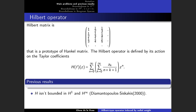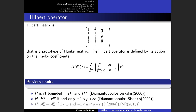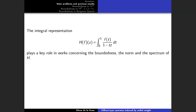Some previous results: when f belongs to H^1 or H^infinity, this series defines an analytic function, so the Hilbert operator is well defined, but it is not bounded in H^1 or H^infinity. Moreover, the Hilbert operator H is bounded in H^p if and only if p is between 1 and infinity. Concerning the standard weighted Bergman spaces, the Hilbert operator is bounded in A^p_alpha if p is greater than 1 and alpha is greater than minus 1 and less than p minus 2. We also know that the Hilbert operator has an integral representation given by this formula, which plays a key role in results concerning the boundedness, the norm, and the spectrum of H.